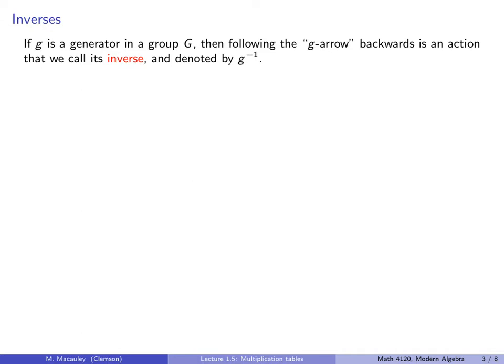If g is a generator in a group G, then following the g-arrow backwards is also an action that we call its inverse, denoted by g^-1.